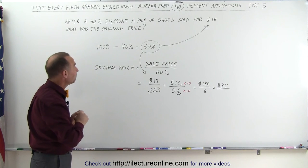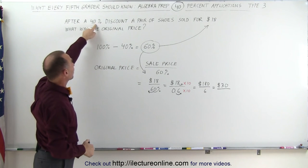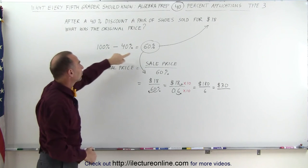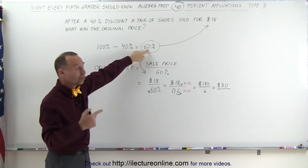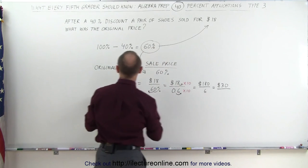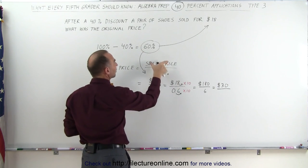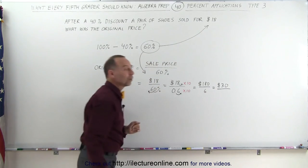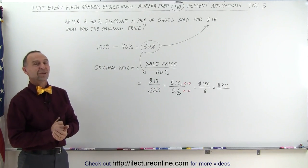So, recapping what we did, we knew that there was a 40% discount. When we subtract 40% from 100%, we get the remainder 60%, which represents the sale price. If we then want to get the original price, we divide the sale price by the 60%, and that gives us back the original price. That's how that's done.